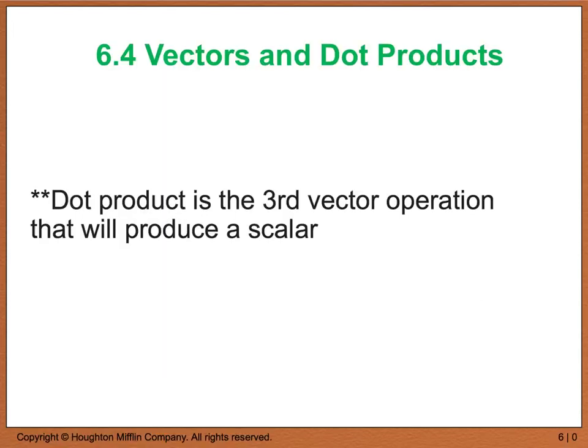Section 6.4 is all about dot products. Now a dot product is actually a third vector operation. If you recall back in section 6.3 we looked at scalar multiplication and addition of vectors. Our vector operation of a dot product will produce a scalar, and remember a scalar is going to produce a single number instead of another vector.